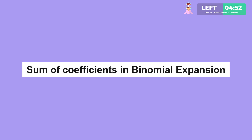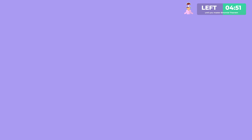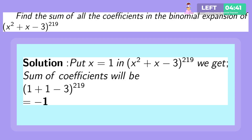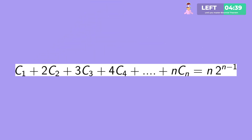To find the sum of coefficients in a binomial expansion, put all values of the variable as 1 and you will get the sum. Using a little bit of calculus, you can also find that C1 plus 2C2 plus 3C3 plus 4C4 up to n·Cn equals n into 2 to the power (n minus 1).